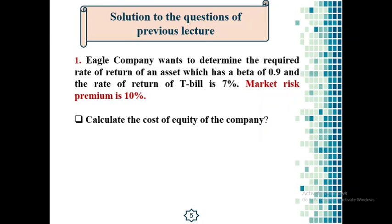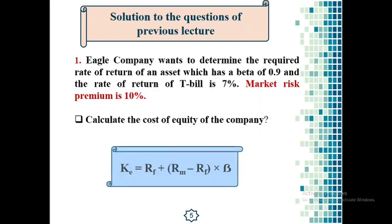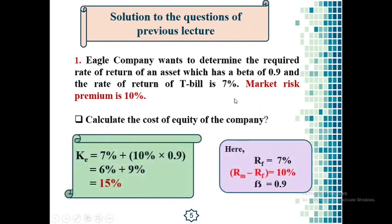We have to calculate the cost of equity according to the formula of Capital Asset Pricing Model, or CAPM. In this case, the risk-free rate of return is 7%, the market risk premium is 10% — that is, the difference between market return and risk-free rate of return is 10% — and beta is 0.9. Just putting the values in the formula, we get our answer: 15%. The cost of equity of Eagle Company is 15%.